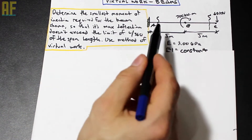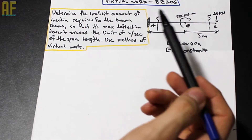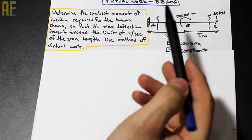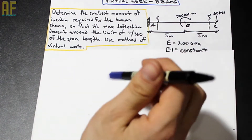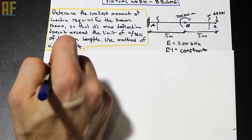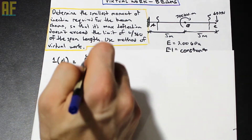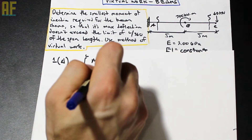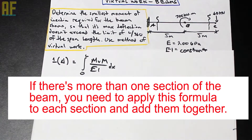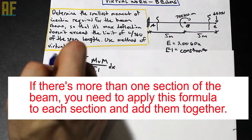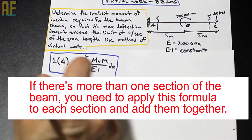So what is the virtual work method? Essentially, it's derived — it's a work energy method. It's similar to Castigliano's theorem, and they equate the external work to the internal work, and from that they arrive at this formula: unit deflection is equal to the integral of M·Mv over EI dx. So this is the virtual work formula for deflection, and this is a determinant method.